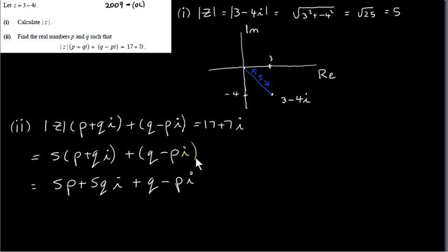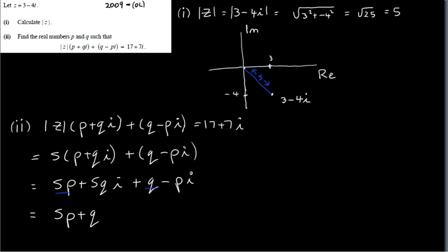I can drop the brackets because we just have a plus sign and plus 1 into this, so it doesn't change it. What I can do then is write this as a single complex number. Put terms that don't involve i together — that's 5p plus q. And terms that do involve i are put together, factorizing i out: 5q minus p times i. So the left hand side is 5p plus q plus 5q minus p times i, and the right hand side is 17 plus 7i.